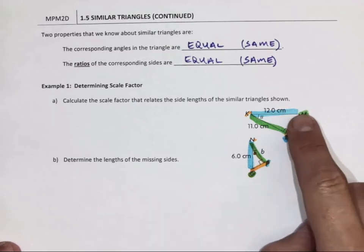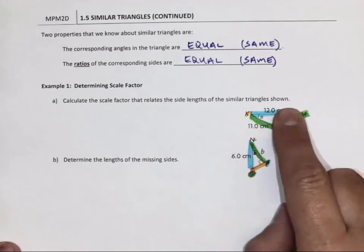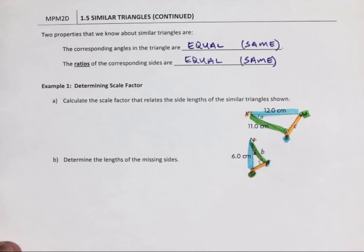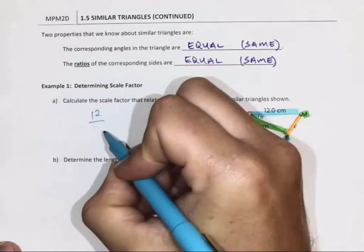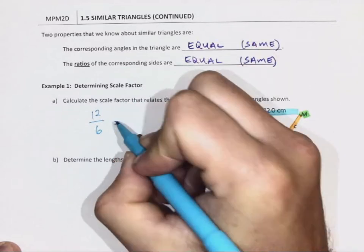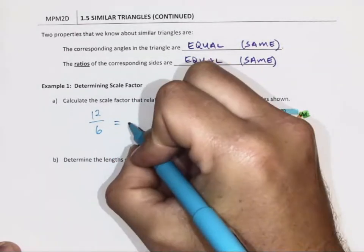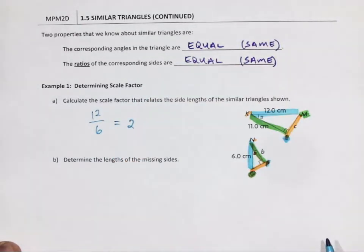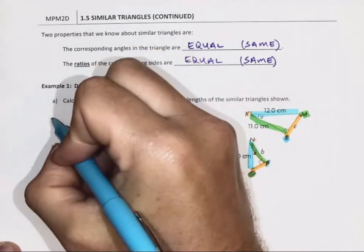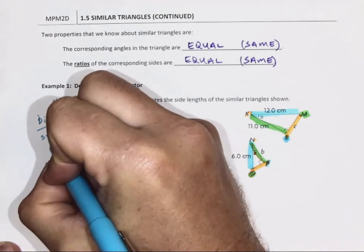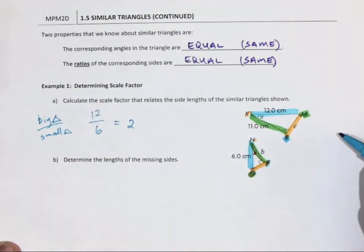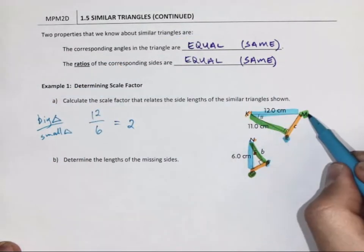So again, let's look. I'm going to look at the larger triangle and I have two matching sides, two corresponding sides. So 12 divided by 6 gives me a scale factor of 2. Right? So again, that is big triangle divided by small triangle.